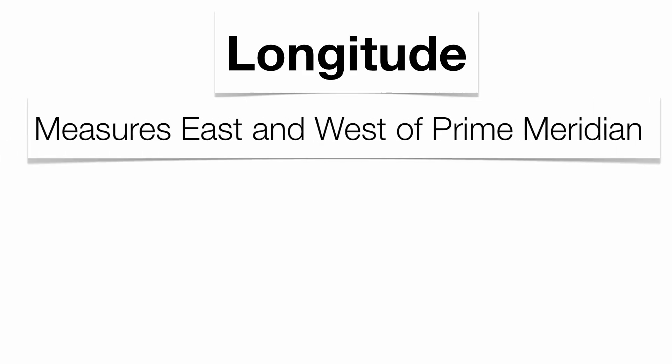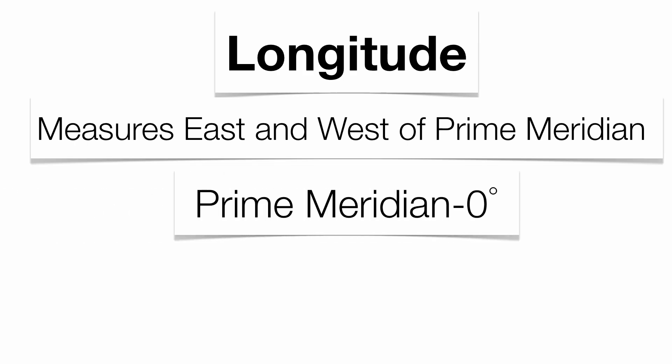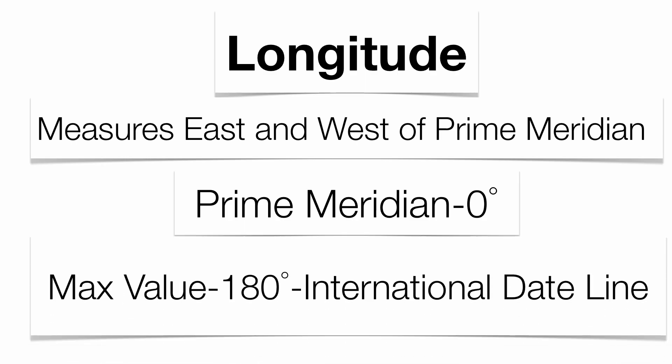Longitude is a little bit different because longitude is not only going to help us determine location, it's also going to help us determine time. The main line here is going to be the prime meridian, which has a value of zero. You measure east and west of the prime meridian to a maximum value of 180 degrees — that's what we call the international date line. Most maps are going to go by 15-degree increments as well, because that's going to help us determine time.